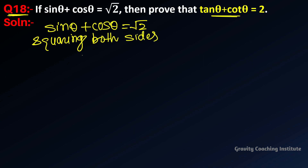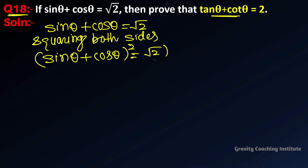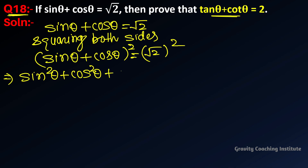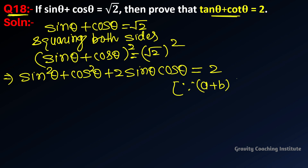Squaring both sides: (sin θ + cos θ)² = (√2)². Applying the algebraic identity (a + b)², this gives sin²θ + cos²θ + 2 sin θ cos θ = 2. Here we have used the (a + b)² identity.